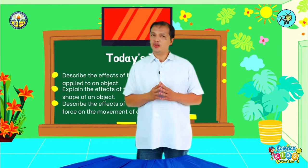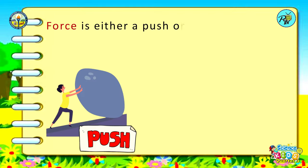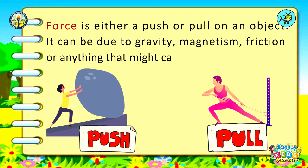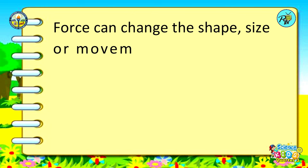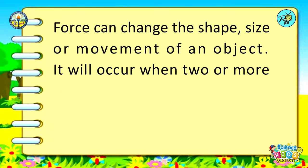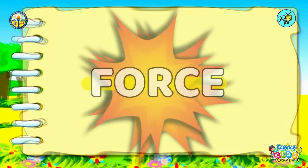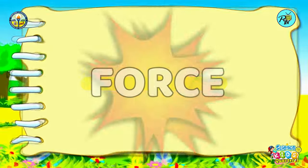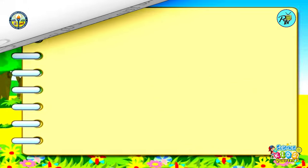Now, do you know what force is? Force is either a push or pull on an object. It can be due to gravity, magnetism, friction, or anything that might cause an object to move. Force can change the shape, size, or movement of an object. It will occur when two or more objects interact with each other. Push is a force that moves an object away from another object, while pull is a force that moves an object closer to another object.